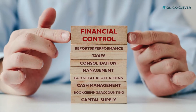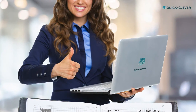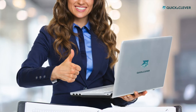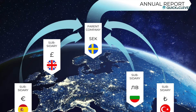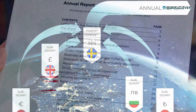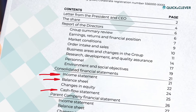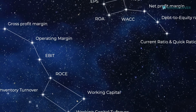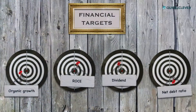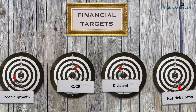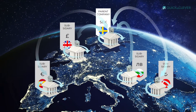What are the elements of financial control? How do you process all financial information? Consolidation — how does it work? What financial reports are produced? What other financial information is produced and analyzed? What are the financial targets of your company? How to organize the flow of cash?